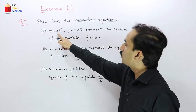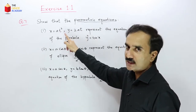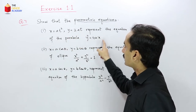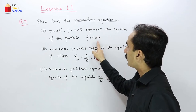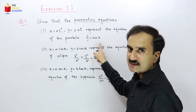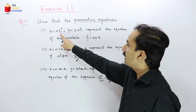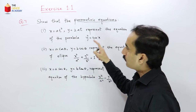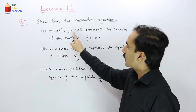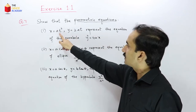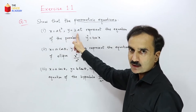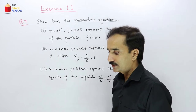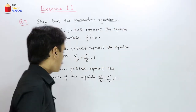So these two are parametric equations and we have to prove that these parametric equations represent this equation. This is a simple xy Cartesian equation. The procedure is that we eliminate the parameter t from the given parametric equations to get the Cartesian equation. So let's solve.